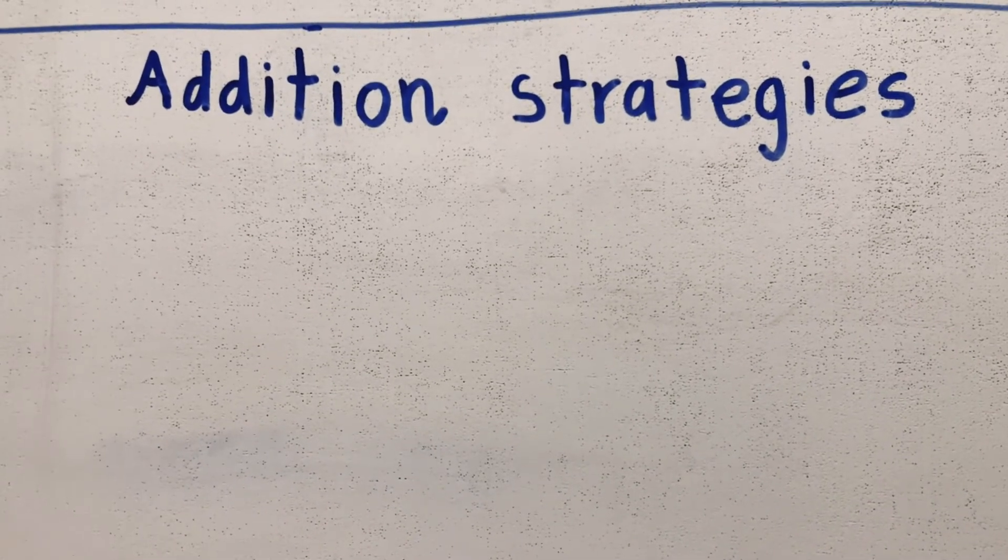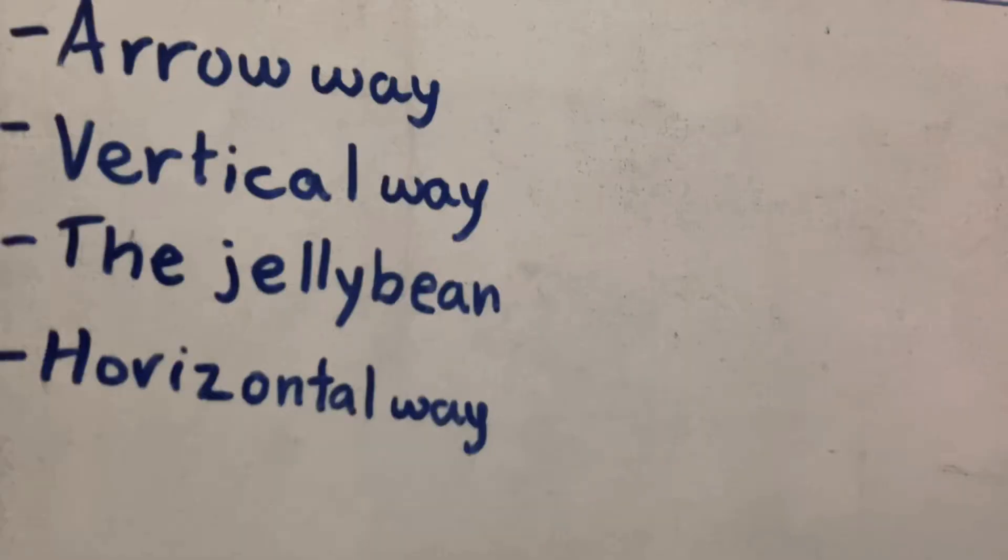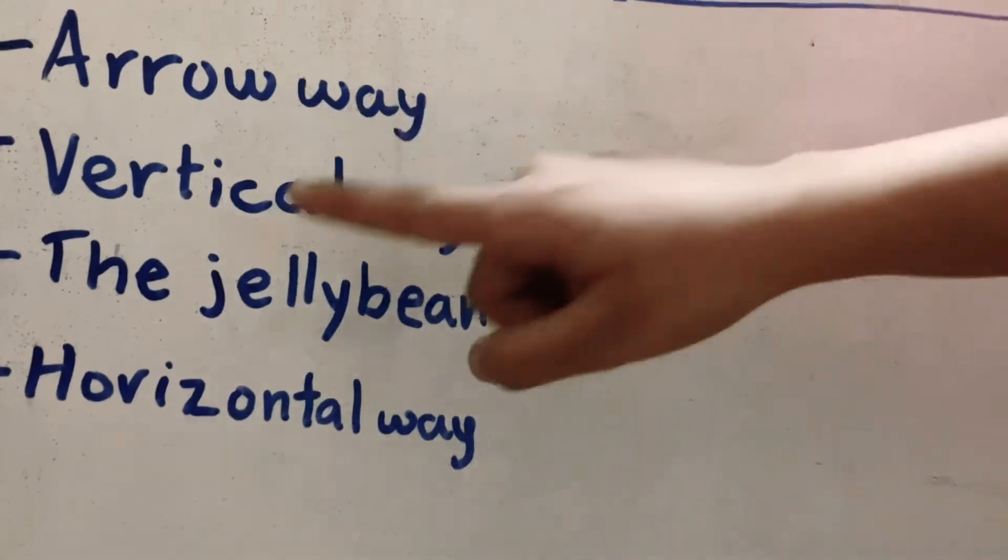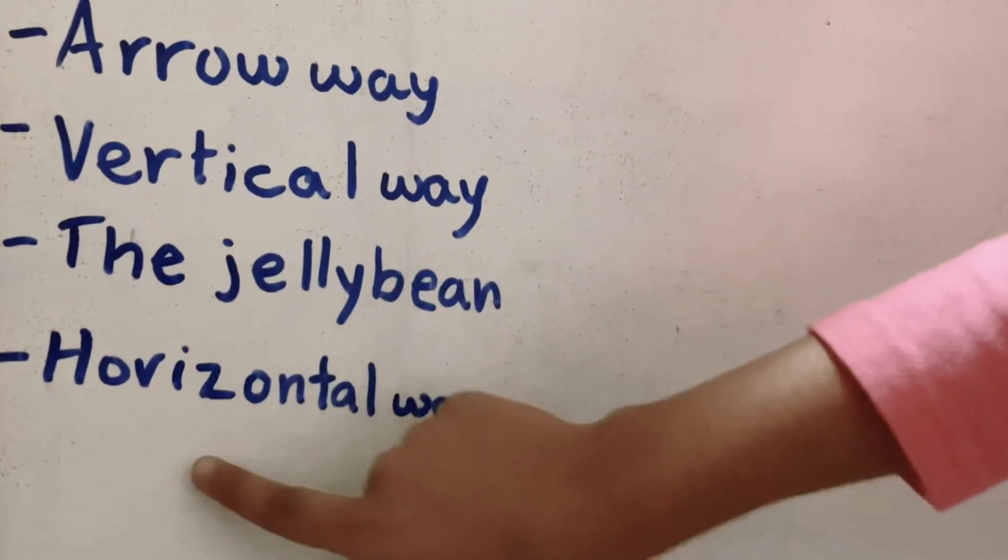Hi, I'm Shamiksha and today I will tell you four addition strategies. The four strategies are the arrow way, the vertical way, the jelly bean, and the horizontal way.